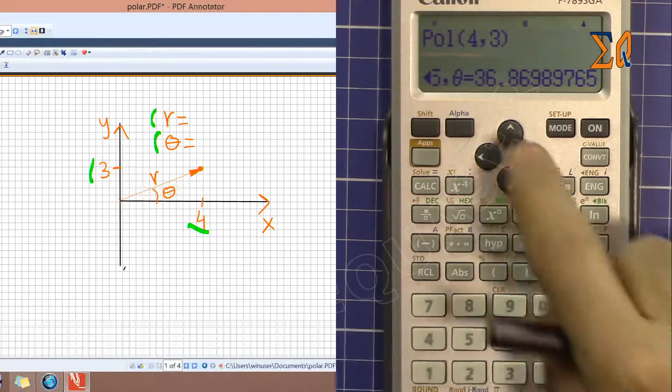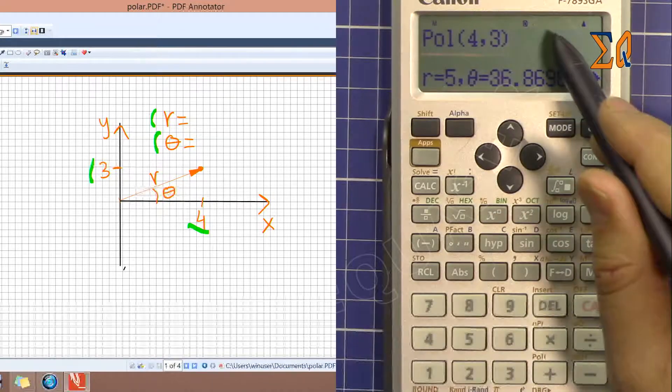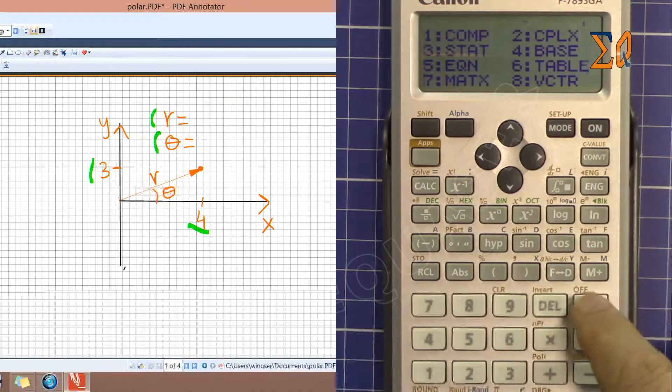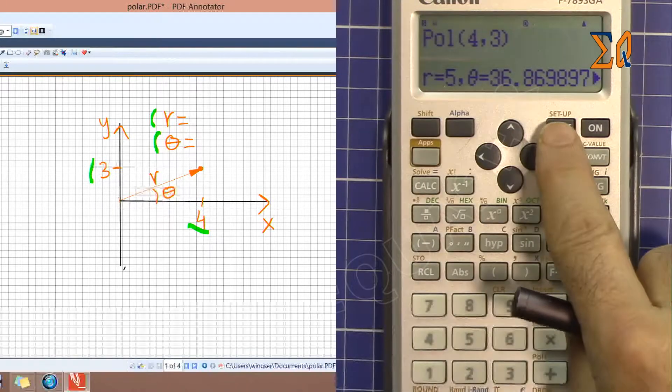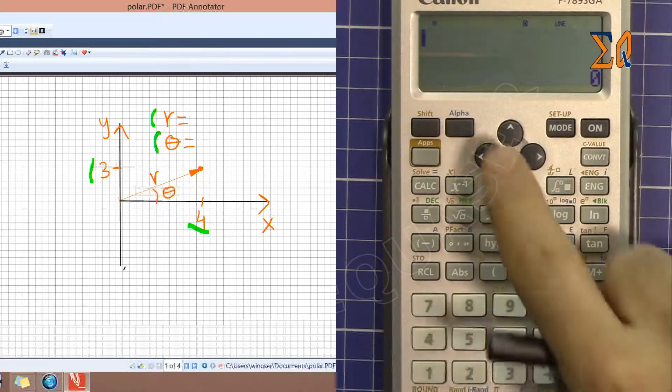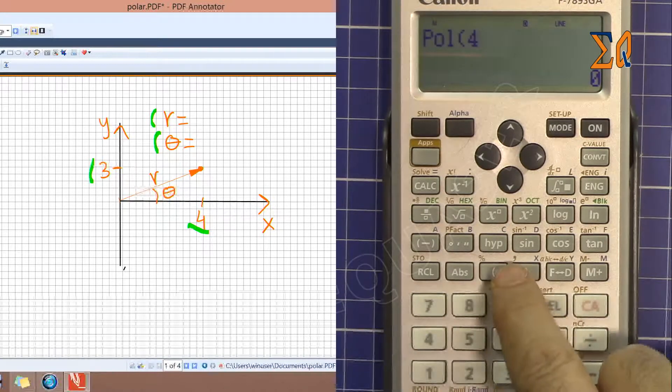But also if you want to always see it, in case if you're doing a lot of polar rectangle calculation, just press mode, press shift setup, and select line which is number two.